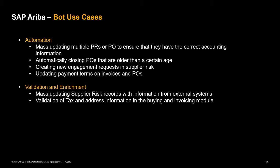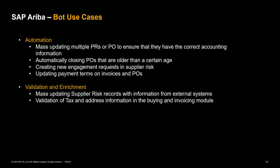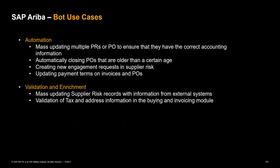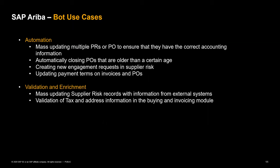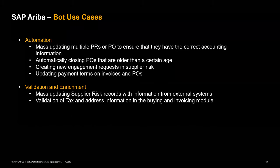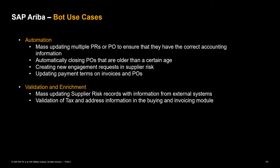In the validation and enrichment section, we've seen customers use bots for mass updating supplier risk records with information from external systems. We do have an API that came out in Q3 — a supplier risk custom forms API — that can hopefully allow customers to use an API for this rather than bots, which a lot of customers have been looking for. The next use case is validation of tax and address information within the buying and invoicing module, where the bot checks whether address or tax information is valid.